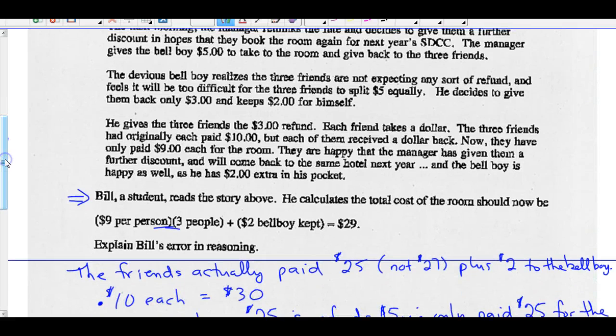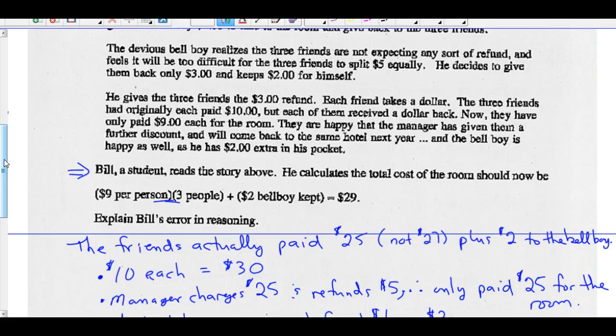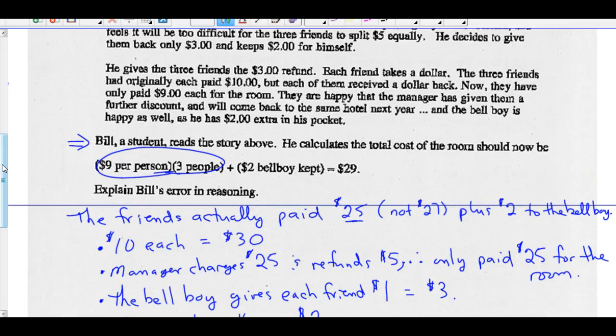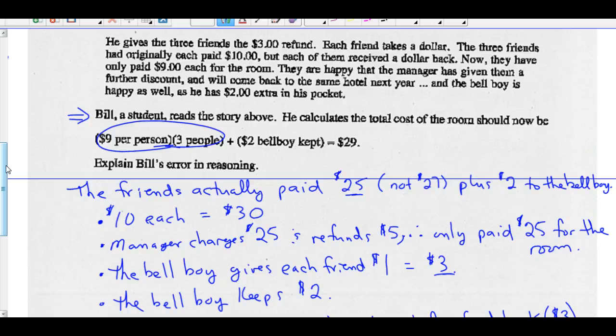So let's look at this. $10 each originally, $30. That's what they started by paying. All right. Then the manager charges $25 and refunds $5. So the friends only paid $25 for the room, not the $27. The bellboy gives each friend a dollar back. So that's the $3 they get back. And then the bellboy kept $2.